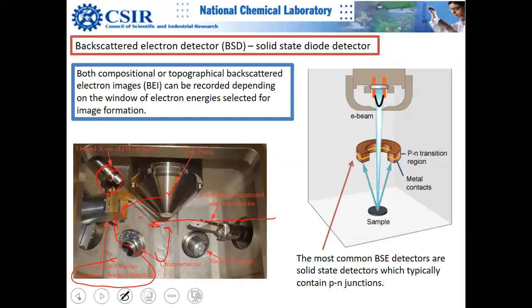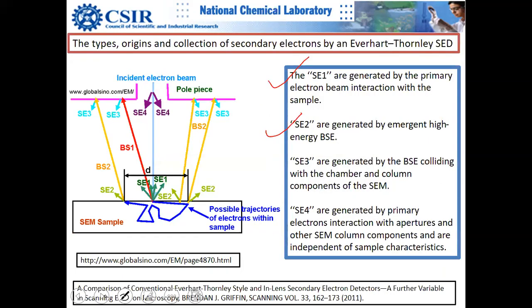Primary electrons coming downward can also generate secondary electrons from chamber components, and similarly you can have different kinds of backscattered electrons: BS1, BS2. SE3 electrons from the lens system are fairly common and degrade image quality.